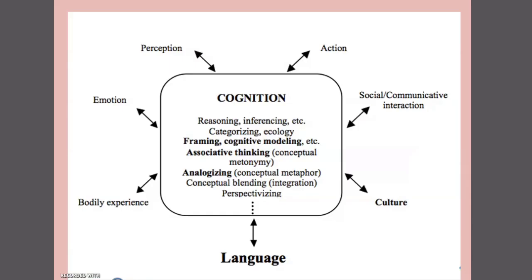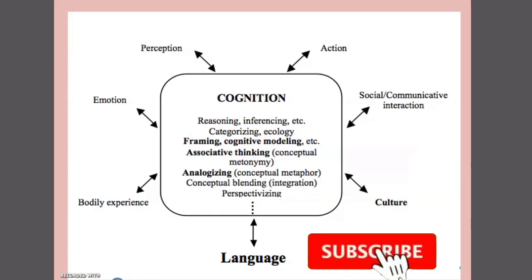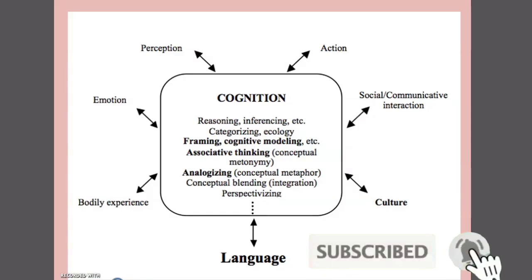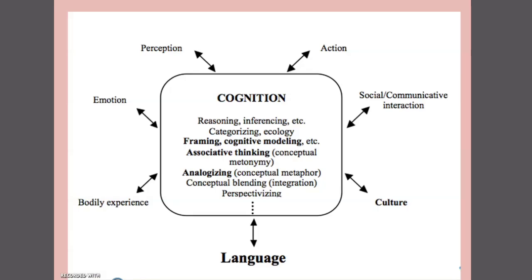This is a chart showing the relationship between cognition and language. You can see that cognition is related to language. Cognition includes perception, action, social communication, culture, body experience, emotions, and more — all of these are based upon and packed together with language. So cognition and language have a strong connection.